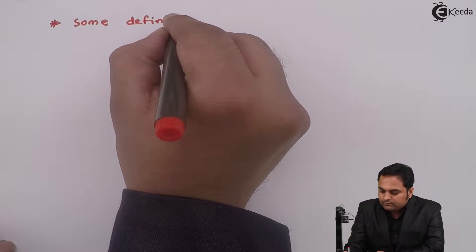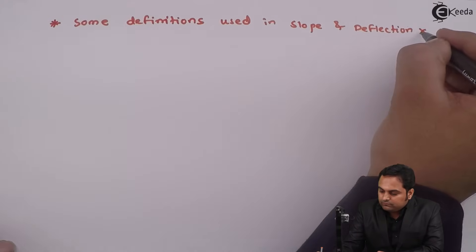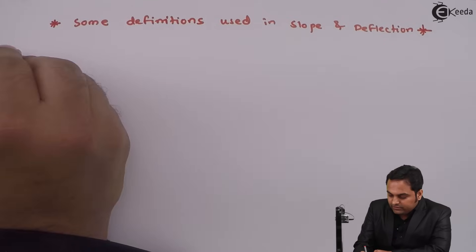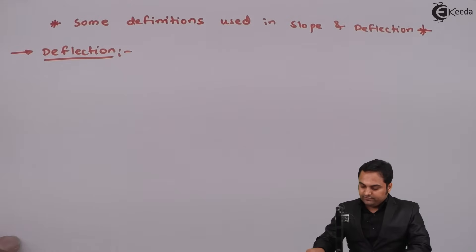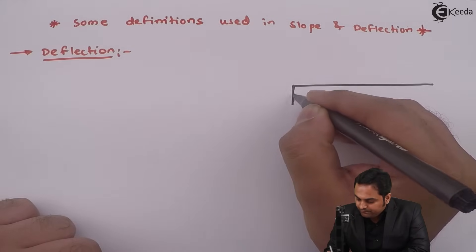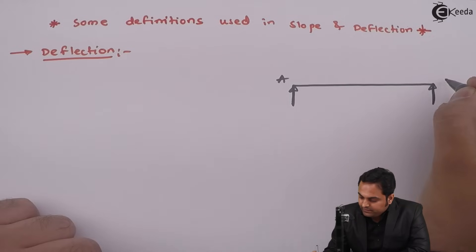Hello friends, in this video we will see some definitions which are used in the chapter of slope and deflection. The first definition is deflection, and to explain that I'll draw the diagram. I am considering a beam which is simply supported at A and B respectively.